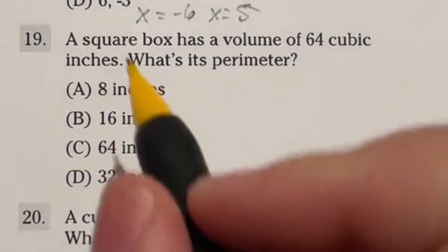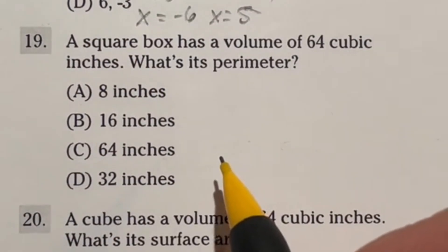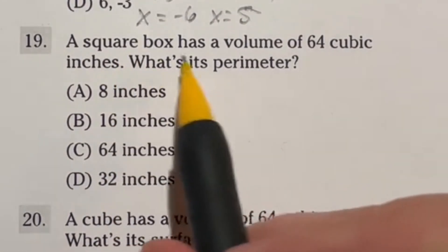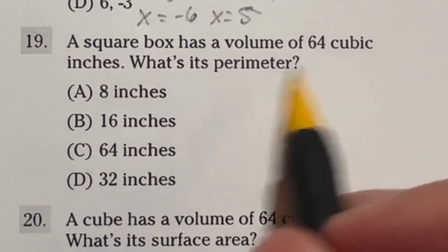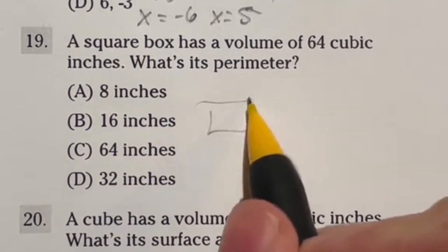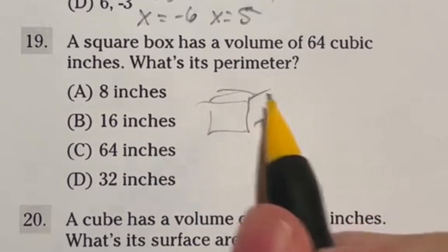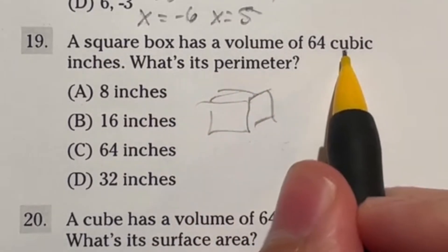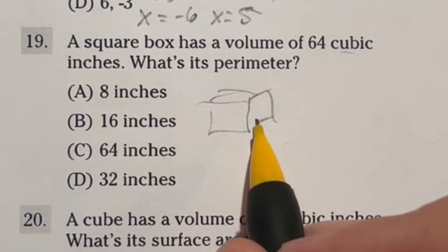So number 19 is honestly just a terrible question. It shows you sometimes that test makers don't have the best wording. It says a square box has a volume of 64 cubic inches. All right, so we got a square box. Let's say it looks like this.